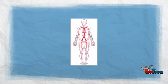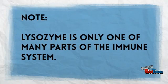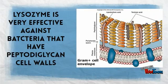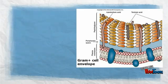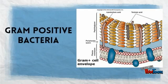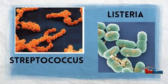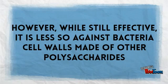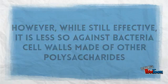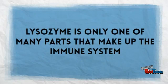It should be noted, however, that while lysozyme acts as an invaluable part of the immune system, it's not the only part. Lysozyme is very effective against bacteria that have peptidoglycan cell walls, a subset known as gram-positive bacteria. This includes a number of genera, from Streptococcus to Listeria. However, while still effective, it is less so with other bacteria cell walls made of other polysaccharides. As a result, lysozyme is only one of many parts that make up the immune system.